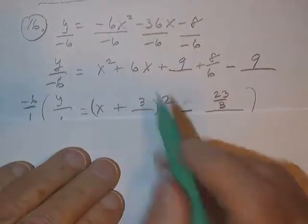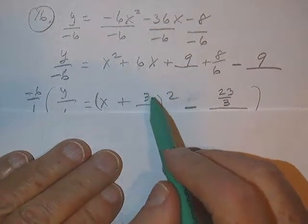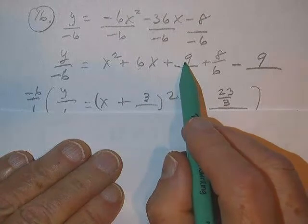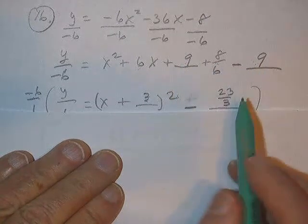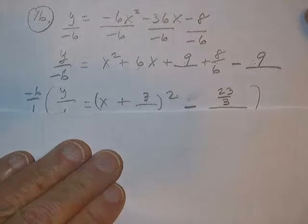But of course, half of 6 is 3, 3 squared is 9. Put a 9 in, take a 9 off. So when I did those two together, I got that.